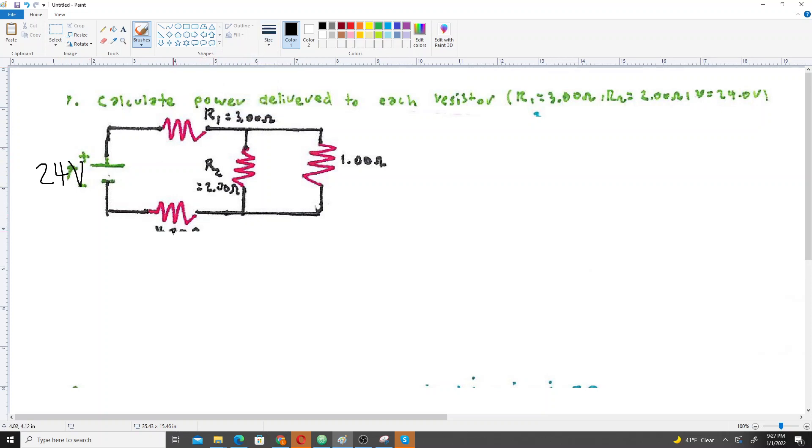You have four resistors: R1 is 3 ohm, R2 is 2 ohm, this one is R3 and it's 1 ohm, and this one is 4 ohm and we'll call this one R4.